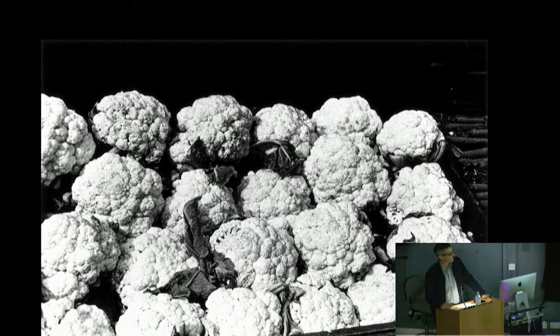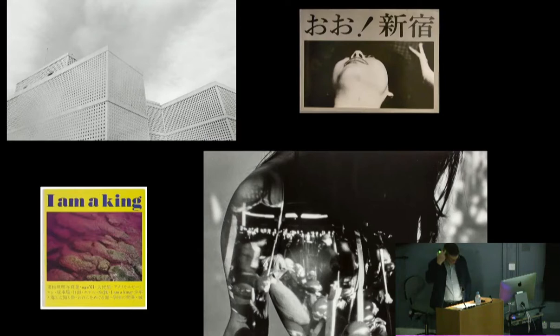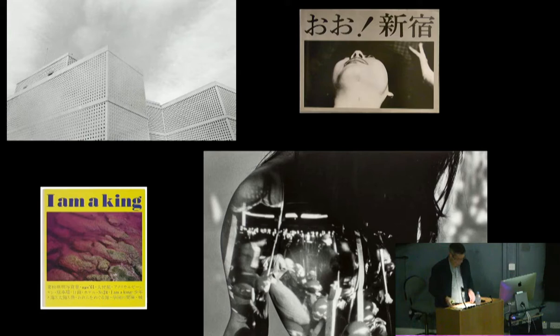Nakahira studied languages — particularly Spanish — at a university in Tokyo, and began work around age 23 as an image editor for a Japanese cultural magazine called Contemporary Eye, a left-leaning cultural journal. It's here that he met the leading Japanese photographer of the period, Shomai Tomatsu. Tomatsu introduced a more subjective, more lyrical form of documentary practice that broke with documentary realism in Japan in the 1950s. He was very concerned with social themes, the American occupation of Japan, and the dramatic process of urbanization — particularly in Tokyo.